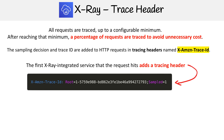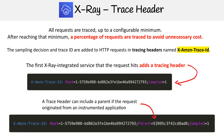Here, this is what it looks like. It has a root and it has a sampled number. And if you have a trace header originating from an actual instrumented application, it could also have a parent field as well.